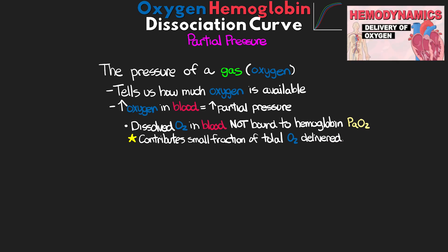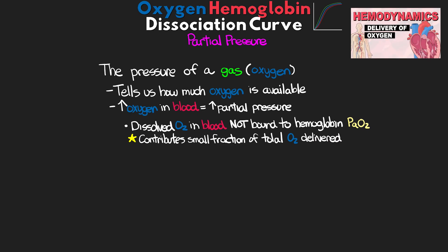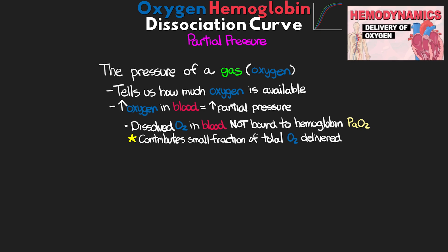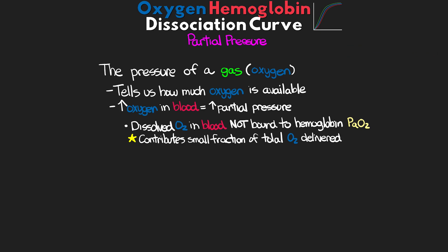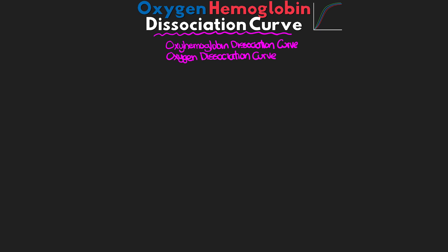Now that we have those two concepts out of the way, let's actually talk about the oxygen hemoglobin dissociation curve. This is also sometimes referred to as the oxyhemoglobin dissociation curve or the oxygen dissociation curve. If we look at the name, dissociation means to separate or disconnect — so we can infer that this is about disconnecting or separating oxygen from hemoglobin.